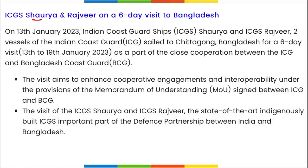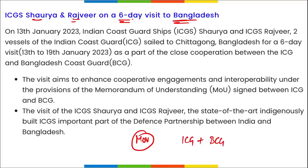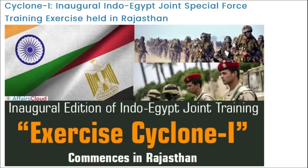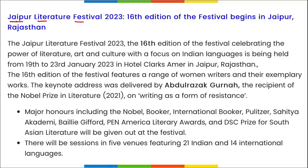ICGS Shaurya and ICGS Rajveer are two Indian Coast Guard ships that were on a six-day visit to Bangladesh. An MoU was signed between the Indian Coast Guard and Bangladesh Coast Guard to enhance cooperation and increase security between the two nations.